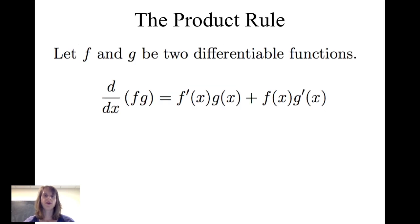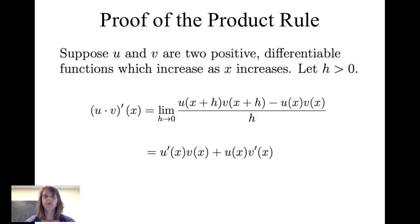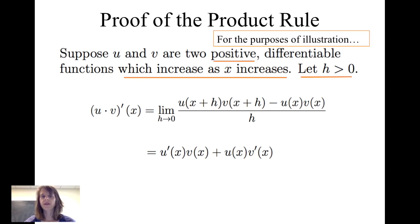The first rule we consider is the product rule. If f and g are two differentiable functions, then the derivative of f times g with respect to x is f prime of x times g of x plus f of x times g prime of x. Let's look at how we know that this is the case. Suppose we have two functions u and v. They're not only differentiable, but for purposes of illustration, we'll say that they are also positive and they increase as x increases. And we're going to let h be greater than 0. Using the limit definition of derivative, we know that the derivative of u times v with respect to x is equal to the limit as h goes to 0 of u of x plus h times v of x plus h minus u of x times v of x, all over h. We want to show that this equals u prime of x times v of x plus u of x times v prime of x.